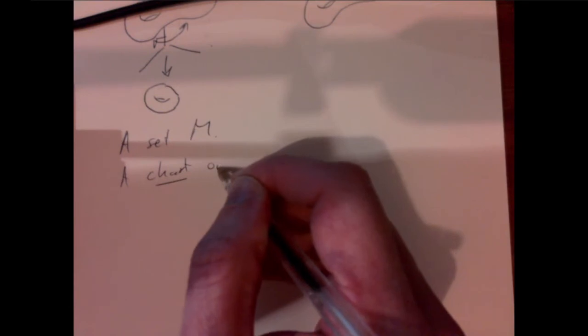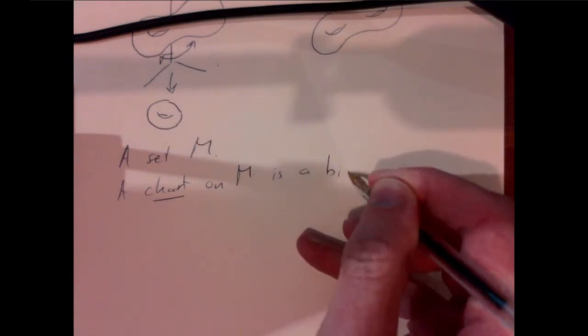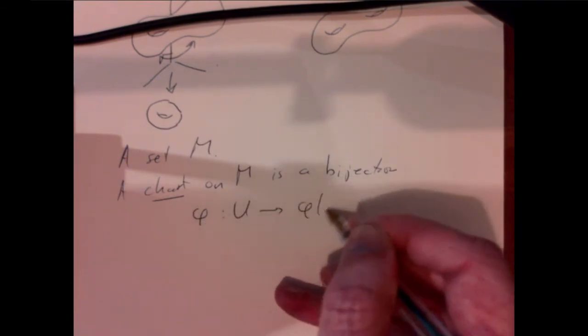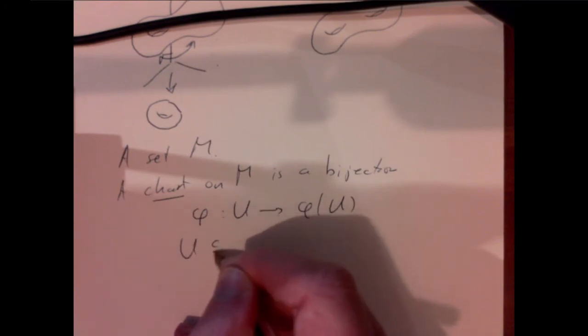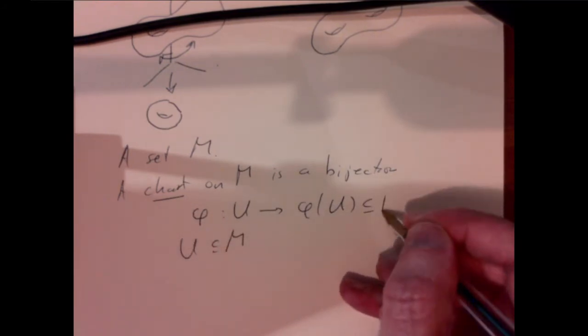No matter how abstract our manifolds are going to be, we're going to try and make them, at least in the small, be very concrete geometric objects. They're going to look locally like Euclidean space. We'll define operations that identify them with Euclidean space locally. So if we pick a set M — it could be any set of any objects whatsoever — a chart on M is a bijection phi taking U to phi of U, where U is a subset of the points of M and phi of U is a subset of Euclidean space.